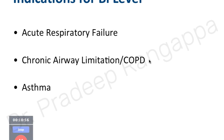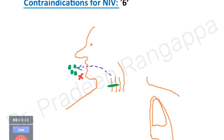IPAP increases tidal volume, reduces CO2, and reduces respiratory effort by reducing elastance and resistance pressure. Indications for bi-level or acute respiratory failure: mainly COPD, asthma. CPAP is used predominantly in pulmonary edema or pneumonias to overcome shunt. Bi-level is used mainly in pulmonary edema where more tidal volume is needed to reduce CO2, in COPD, and in asthma or type 2 respiratory failure.